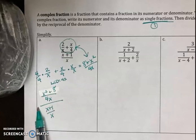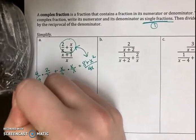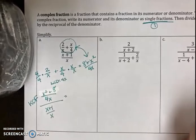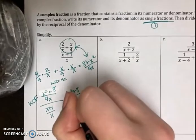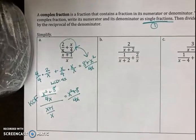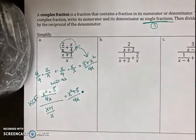So now that I have a single fraction in the numerator and a single fraction in the denominator, we're going to divide. Because overall, this is a division problem. So what we do when we divide is keep, change, flip. We're going to keep the numerator. So x squared plus 8 over 4x. We change from division to multiplication and we flip the denominator.